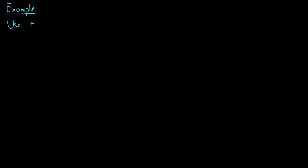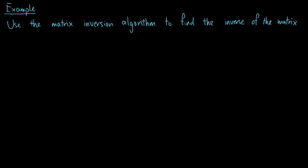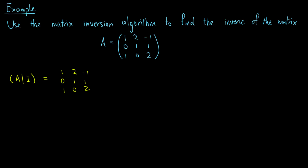Let's end this video with an example to find the inverse of a matrix using the matrix inversion algorithm. Consider the matrix A = [1, 2, -1; 0, 1, 1; 1, 0, 2]. We first form the augmented matrix [A | I], then reduce A to row echelon form.